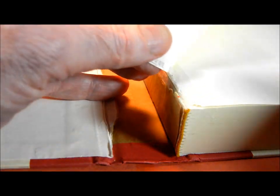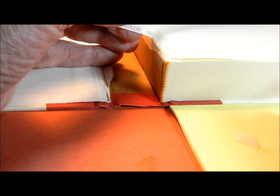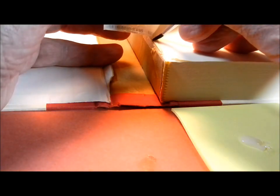If the fly leaf has become detached from the book block, take a small brush and some glue and glue that back together.